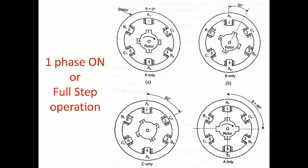The rotor has fewer poles than the stator — this is an important design aspect. The rotor has only four poles and is a salient pole structure. Consider the first diagram: when I give power supply to the A winding, A1 and A2 poles are activated. The rotor is in a position where rotor pole 1 is nearest to stator pole 1, and rotor pole 3 is nearest to stator pole 4.